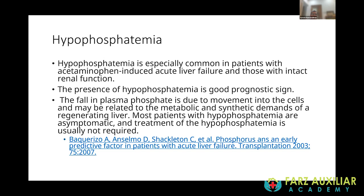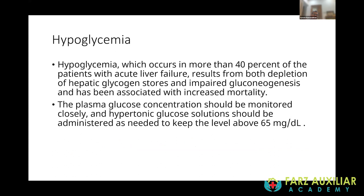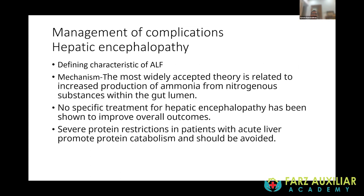Hypoglycemia affects approximately 40 percent of patients with acute liver failure due to depletion of glycogen stores and impaired gluconeogenesis, leading to increased mortality. Plasma glucose should be monitored carefully and kept above 70 mg/dL at all times.